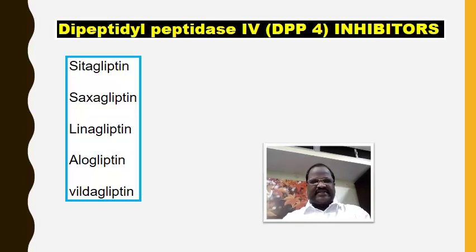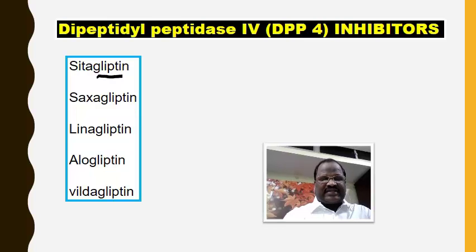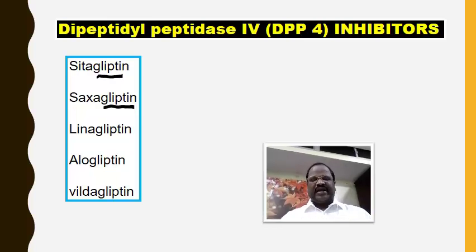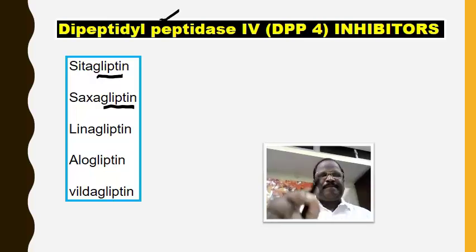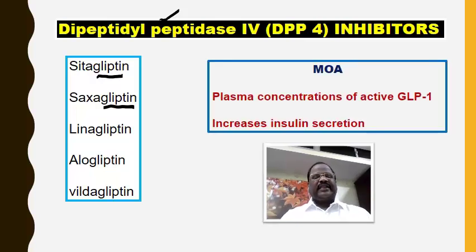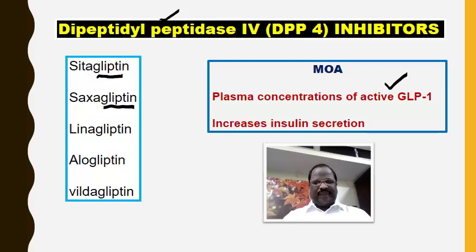Examples for DPP-4 inhibitors are sitagliptin, saxagliptin, linagliptin, alogliptin, and vildagliptin. All drug names end with the suffix '-gliptin'. As the name indicates, these drugs inhibit the dipeptidyl peptidase-4 enzyme, thereby accumulating GLP-1, which in turn increases insulin secretion. So they are also classified as an insulin secretagogue group of drugs.